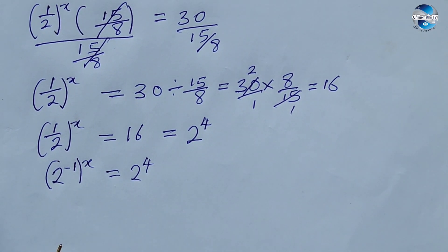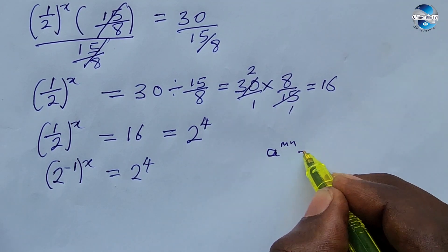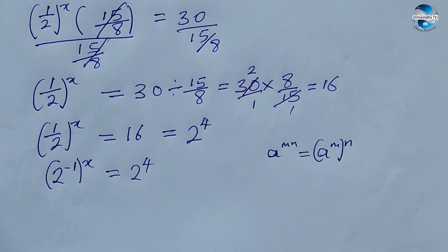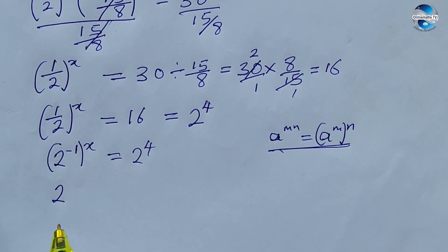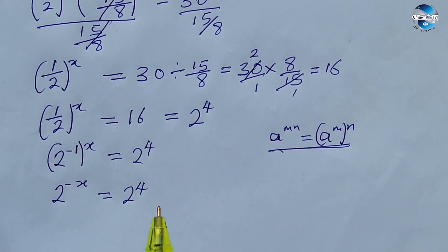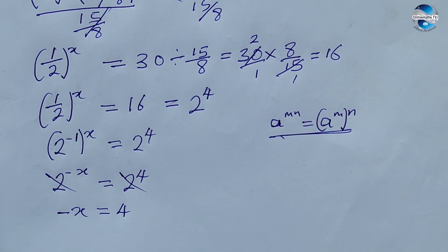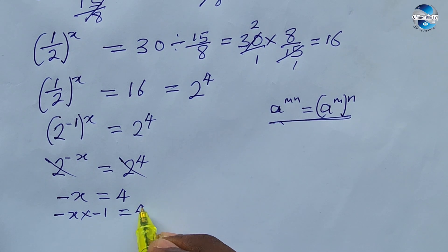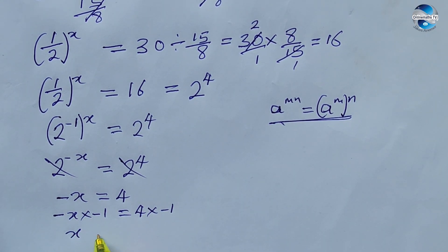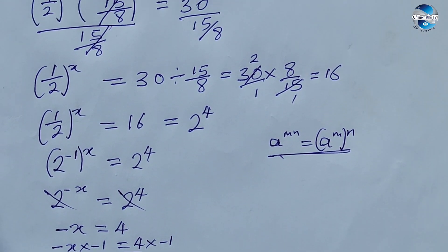We apply the law of indices which says a^(mn) = (a^m)^n. Opening the bracket on the left gives us 2^(−x) = 2^4. The bases are the same, so −x = 4. We multiply both sides by −1 to get x = −4.